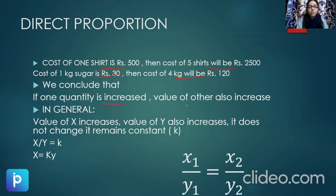So if in general, I take those increments as the constant k, then we'll be getting the simple formula for direct proportion as x1 upon y1 will be equal to x2 upon y2.